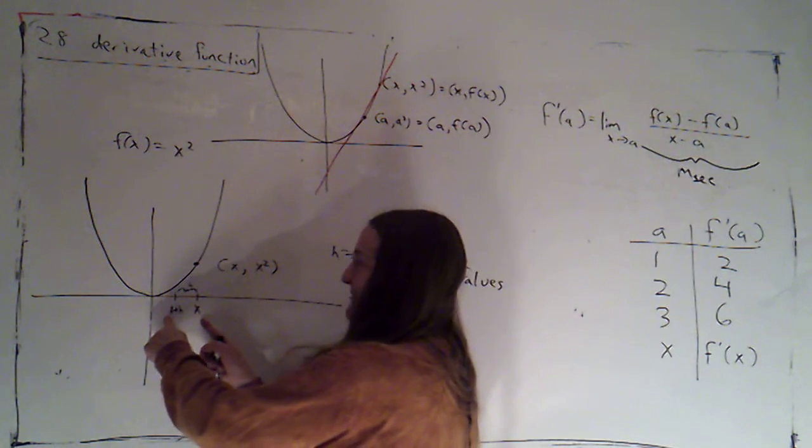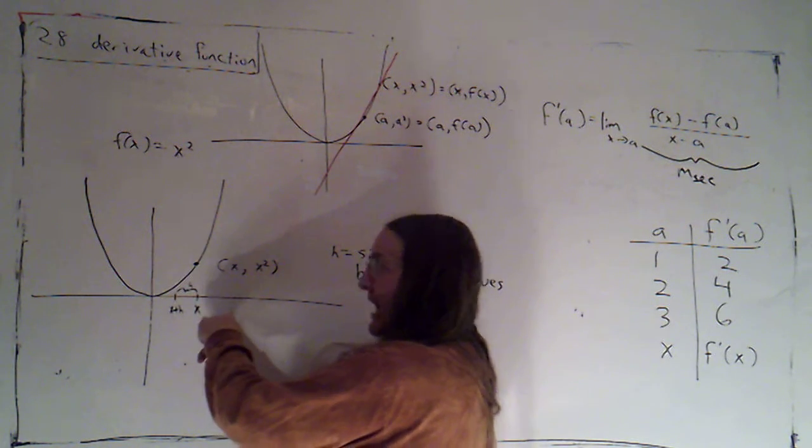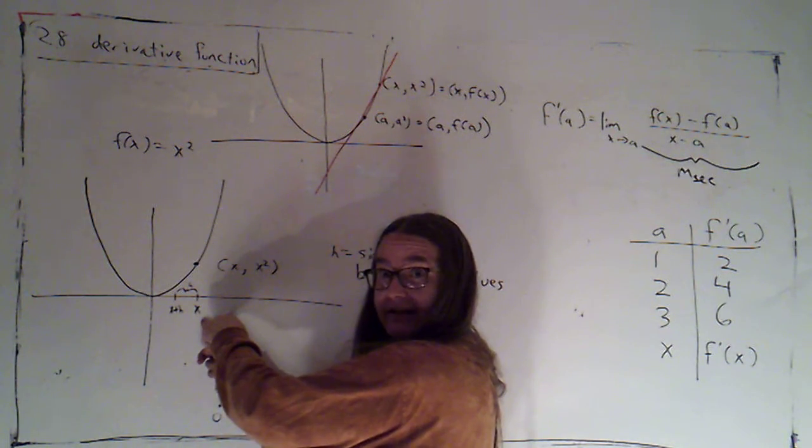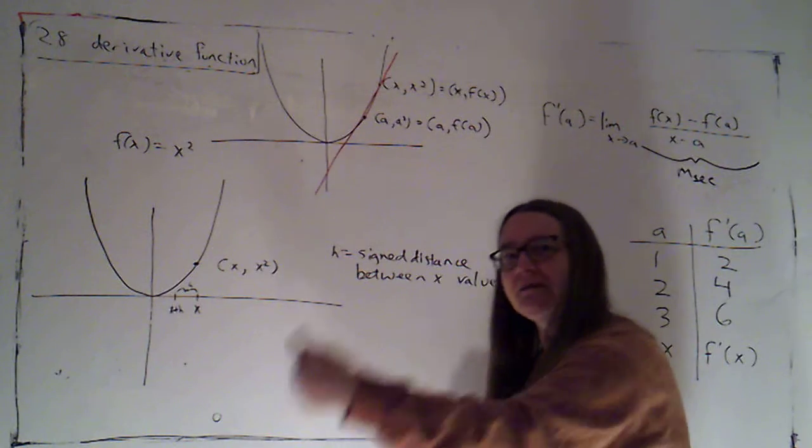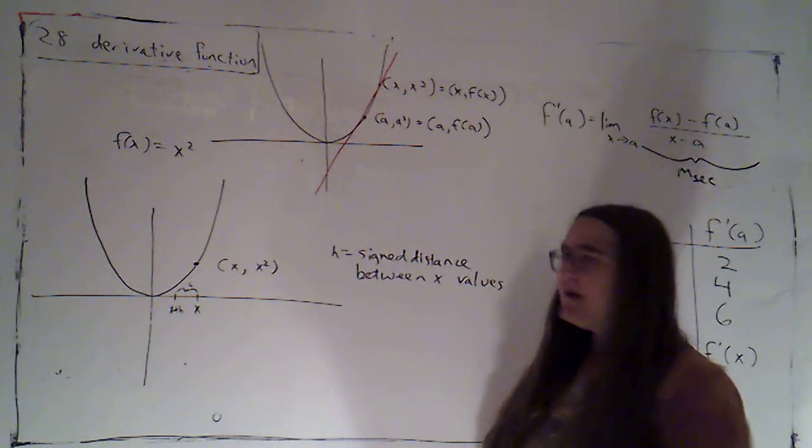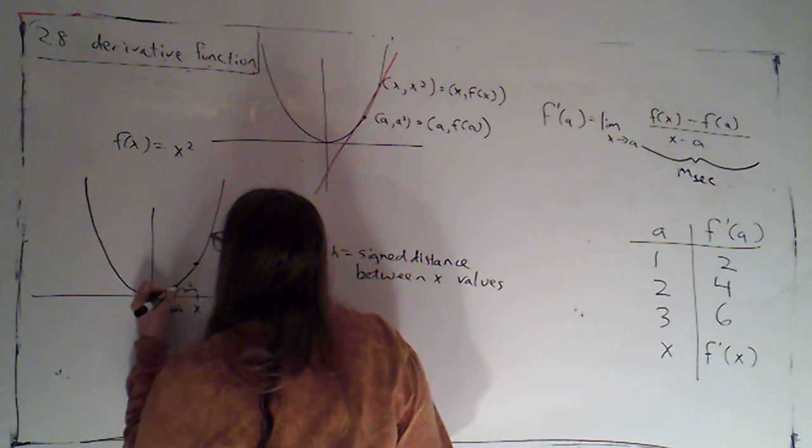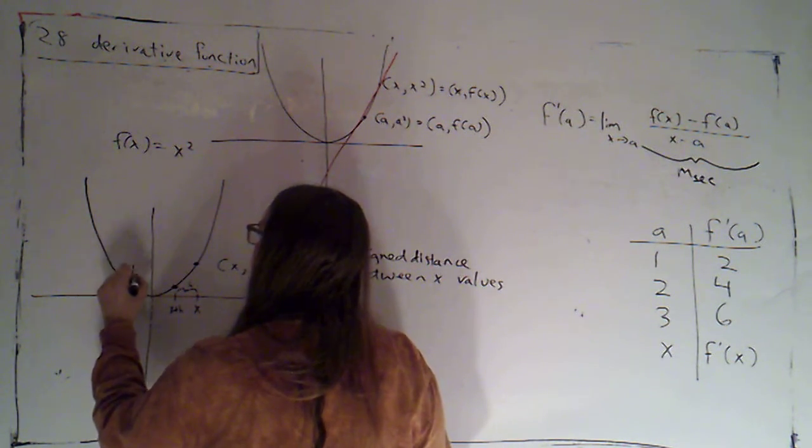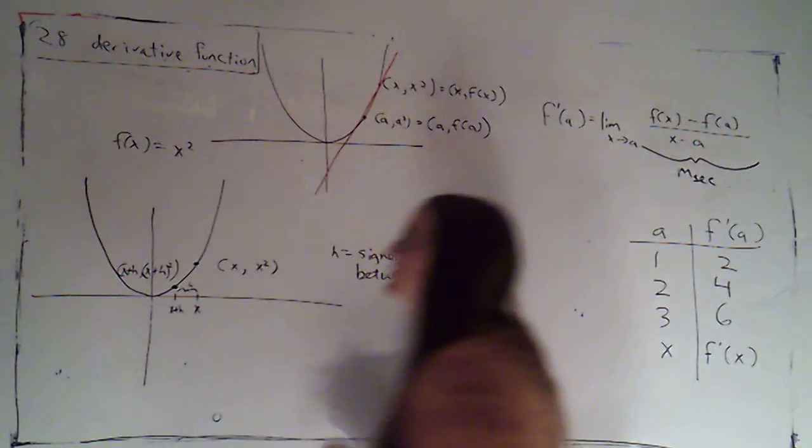If h is a negative number, that's going to mean that x plus h is to the left of x. If h is a positive number, x plus h would be to the right of x. So the sign of h will tell me whether I'm to the left or to the right of the point of tangency. So now if I label this point here, that's going to be x plus h, x plus h squared.